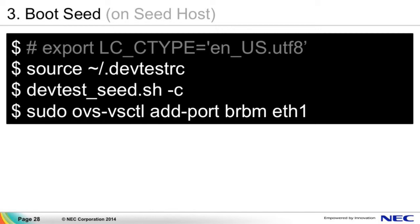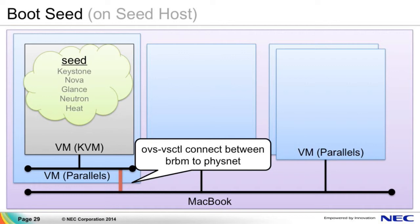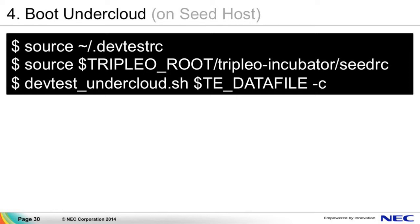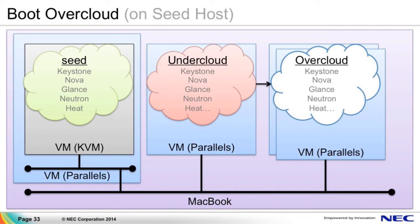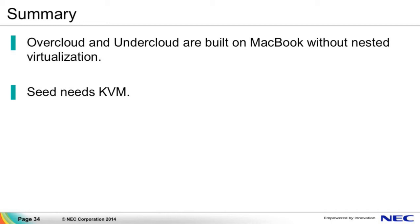After all, we can boot Seed, UnderCloud, and OverCloud. These commands boot a Seed Cloud and configure the network to connect virtual bare-metal from Seed Cloud. As a result, Seed Cloud is booted. In the same way, UnderCloud and OverCloud are booted. The testing Triple O environment has been built on MacBook. Summary: OverCloud and UnderCloud are built on MacBook without nested virtualization, but Seed still needs KVM. Thank you for listening.